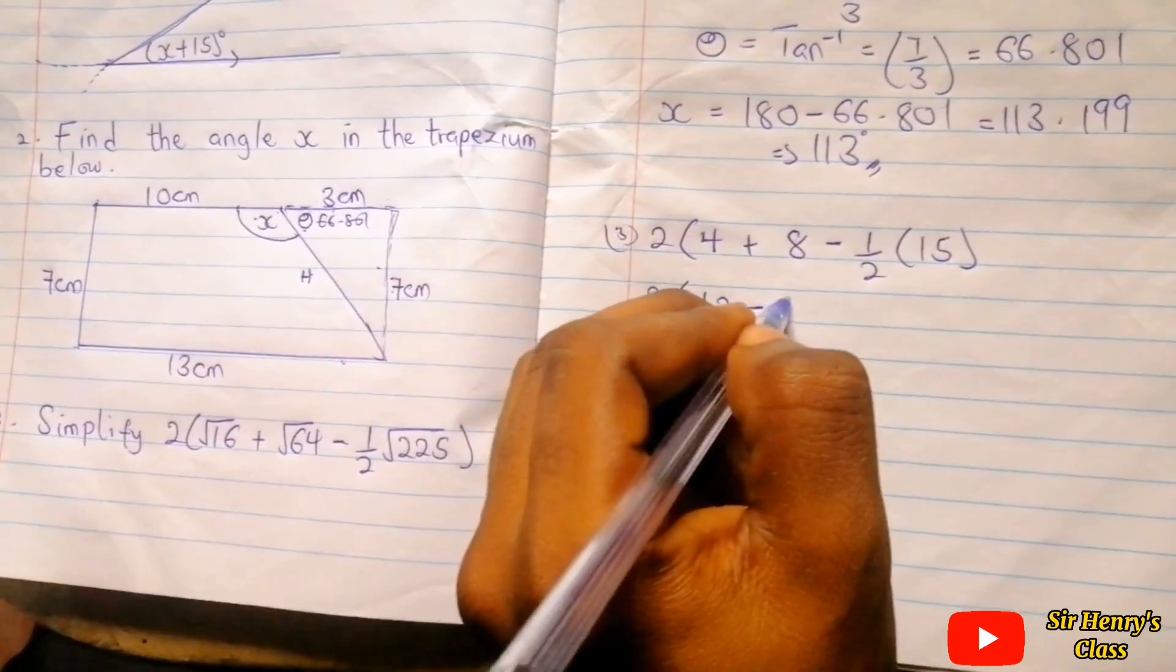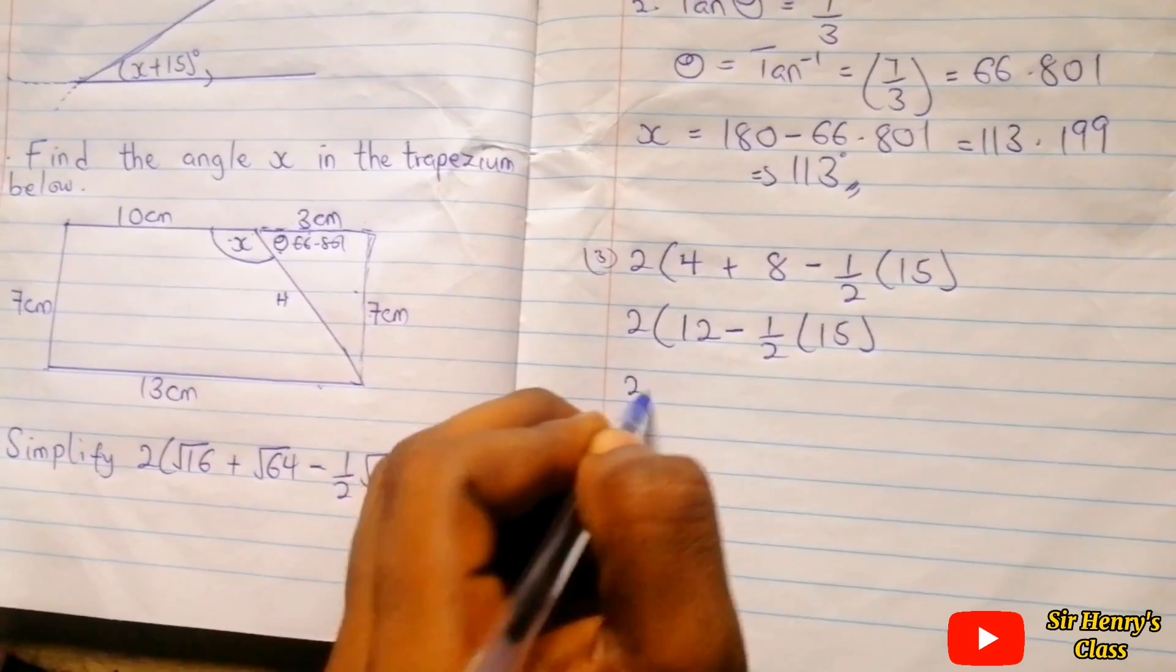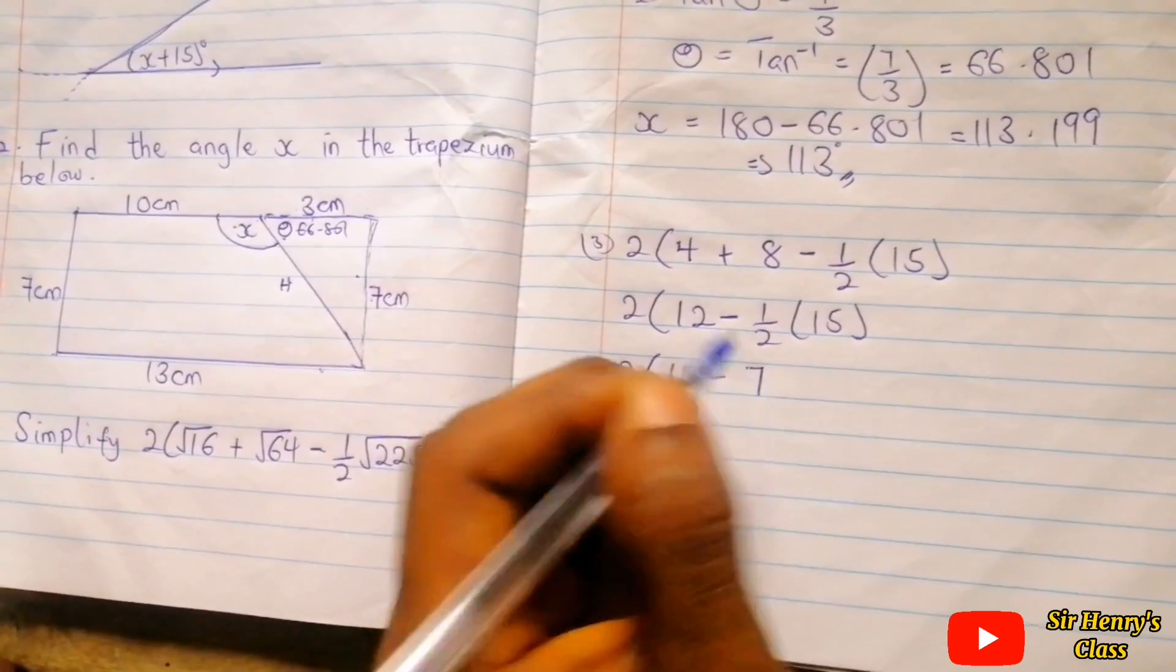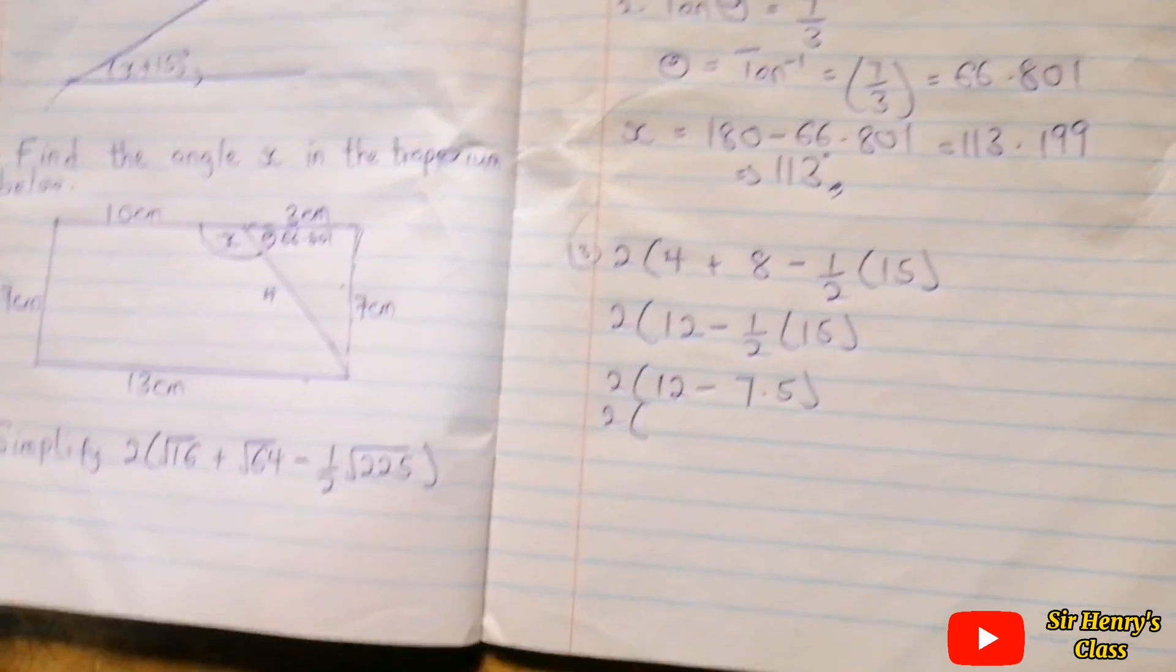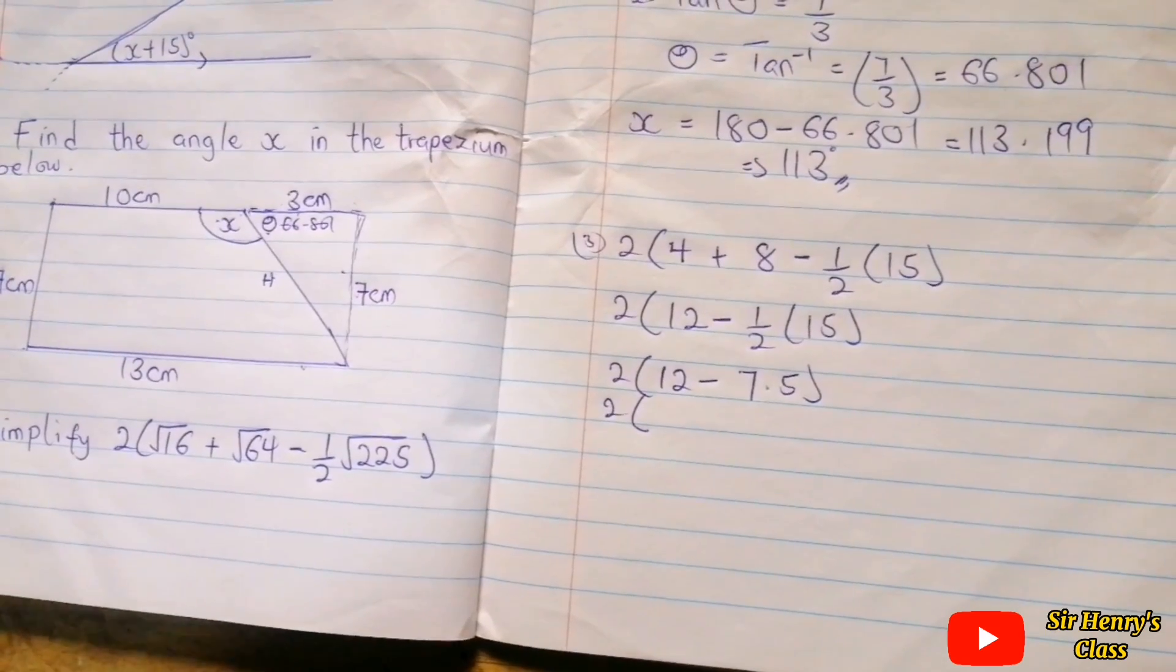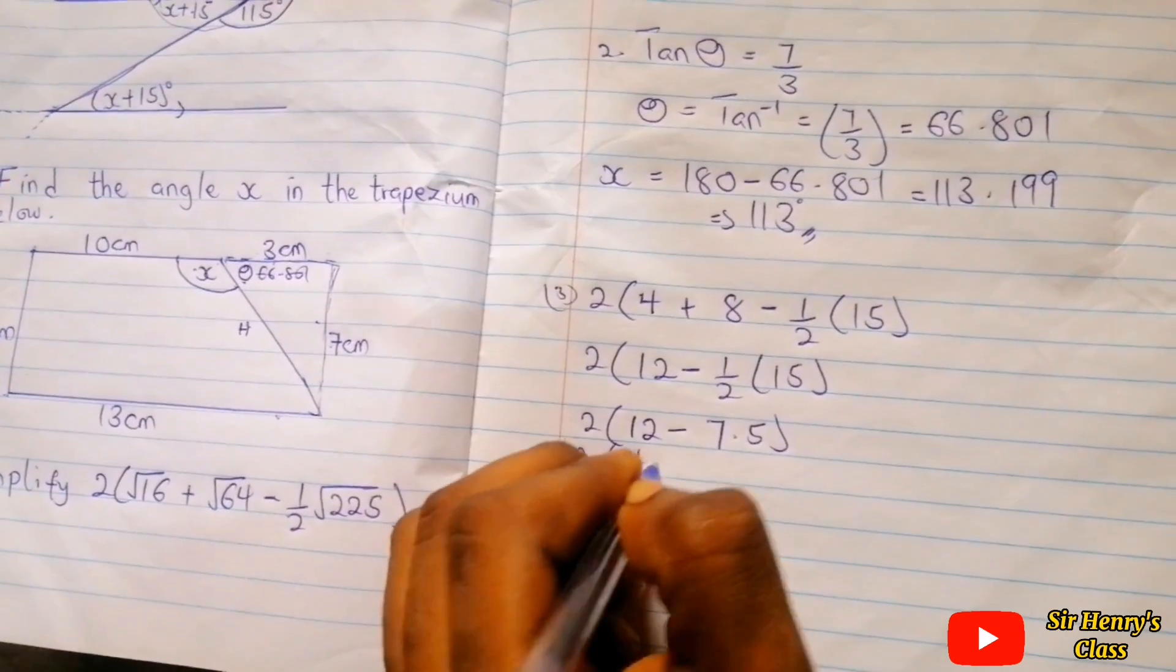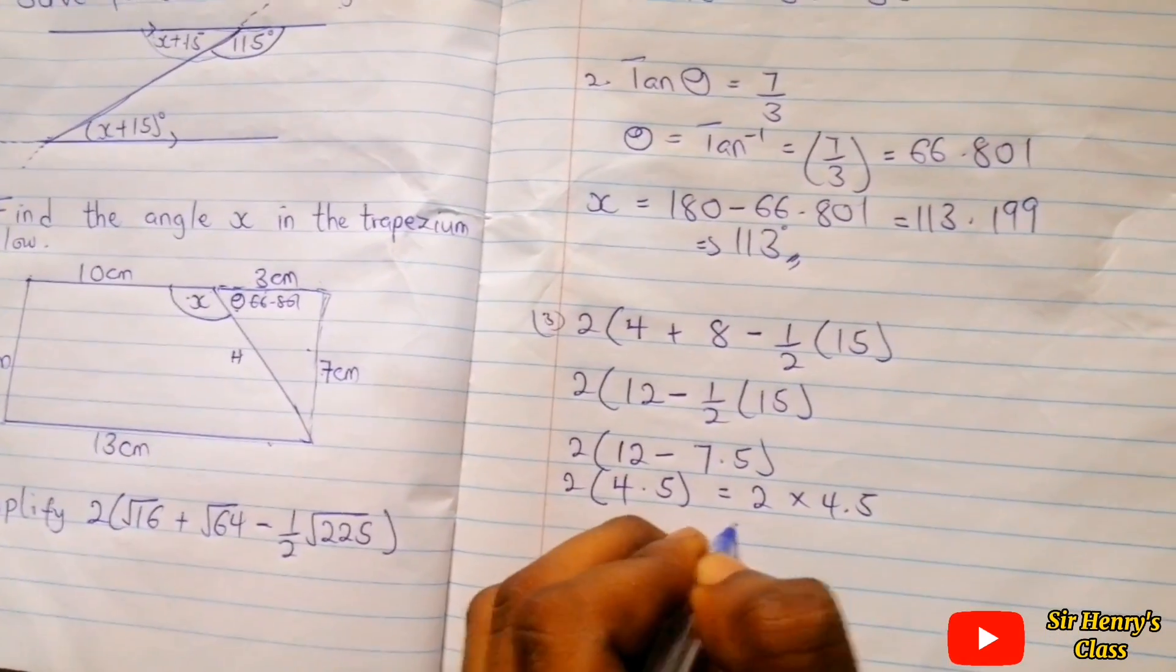12 minus half of 15. So here we have 12 minus half of 15 is 7.5. So 12 minus 7.5, that will give us 4.5. So we have 2 times 4.5.